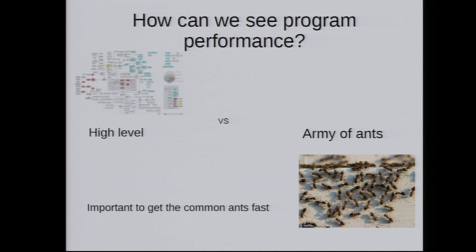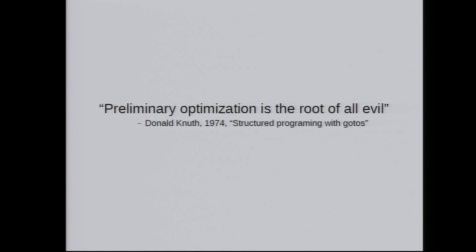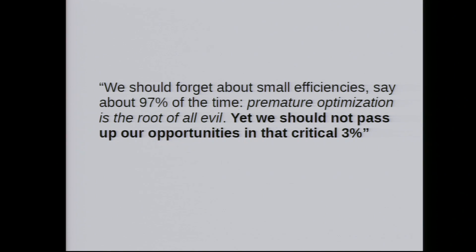I'm not saying you should ignore the big things — big algorithms are important. But also think of the small things. You've probably seen this quote: 'Premature optimization is the root of all evil,' from Donald Knuth, 1974. But if you look at what he actually wrote, it continues: 'Yet we should not pass up our opportunities on those critical 3%.' So basically, don't optimize most of your program, but look at the 3% that matter.